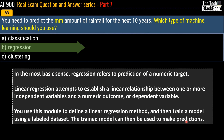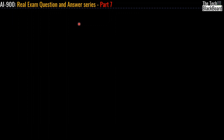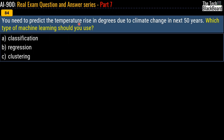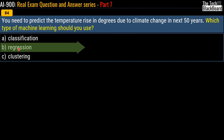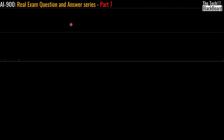To reinforce the concept, Question 84 asks: you need to predict the temperature rise in degrees due to climate change in the next 50 years — which type of machine learning should you use? The correct answer is again regression, because we are predicting temperature, which is a numeric value. These two questions should make it clear: whenever you need to predict a numeric value, always choose regression.